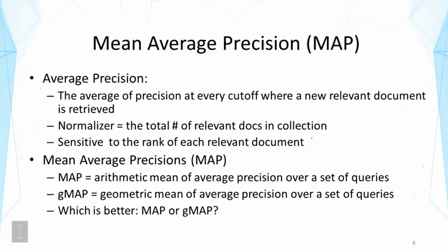Average precision is computed for just one query. But we generally experiment with many different queries to avoid variance across queries. Depending on the queries you use, you might make different conclusions. So it's better to use more queries. If you use more queries, then you would also have to take the average of the average precision over all these queries.